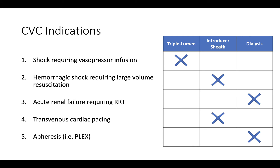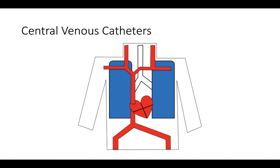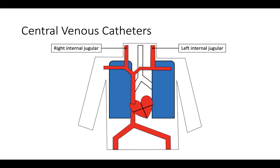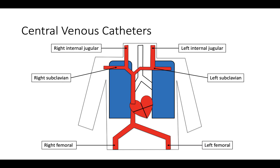Central venous catheters can be placed in three main locations. The most common is the right or left internal jugular vein — the right is typically preferred because it provides a straight shot to the heart with a relatively low complication rate. Lines can also be placed in the right and left subclavian and femoral veins. For internal jugular or subclavian placements, the ideal distal tip location is the cavoatrial junction between the right atrium and superior vena cava.